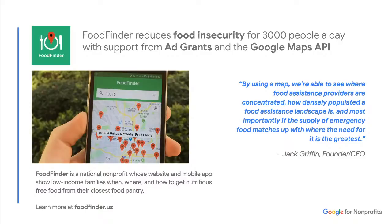Jack is using Maps credits to customize the maps and help people connect to the resources closest to them. In addition to Google Maps, Food Finder is also using Ad Grants to raise awareness and help the organization rise to the top of search results when someone is searching for food near them. With COVID creating more food insecurity issues, Food Finder went from helping an average of 1,700 people a day to 3,000 a day during the coronavirus outbreak, and site traffic increased by eight times.